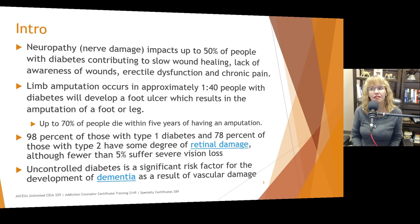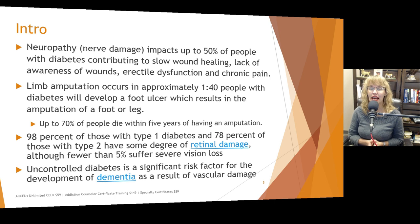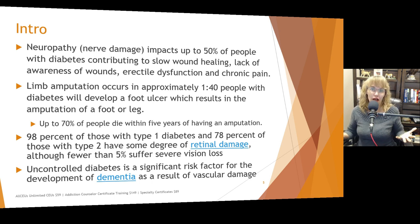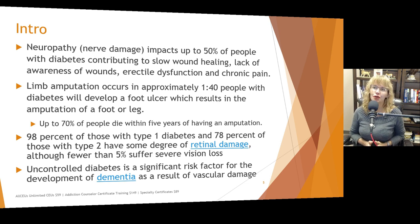Neuropathy or nerve damage impacts up to 50% of people with diabetes, contributing to slow wound healing, lack of awareness of wounds, erectile dysfunction, and chronic pain. Erectile dysfunction can be hugely problematic in relationships as well as to a person's self-esteem — both people in the couple may be affected. The person with erectile dysfunction may feel impotent, and the partner may feel they are no longer alluring enough. It's important to educate them that erectile dysfunction is a potential symptom of diabetes complications. Due to peripheral neuropathy and reduced feeling in fingers and toes, people with diabetes may get injuries and not realize they have them.